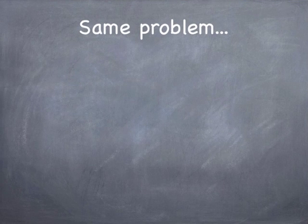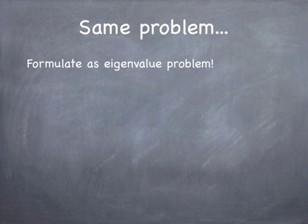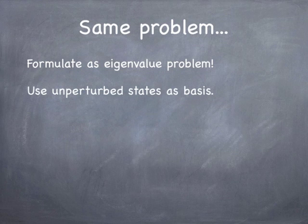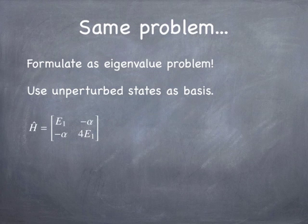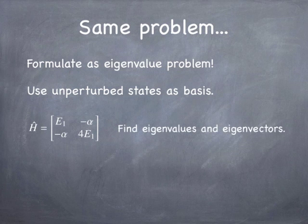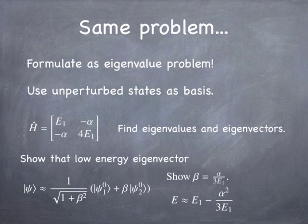There's another way we can attack this problem. We can treat it as an eigenvalue problem. I want you to show, using the unperturbed states as a basis, the ground state and the first excited state (n equals 1 and n equals 2), that you can write the Hamiltonian in matrix form, where alpha is minus the matrix element between n equals 2 and n equals 1 with the perturbation. Find the eigenvalues and eigenvectors. The eigenvector is the ground state plus beta times the first excited state, and beta is alpha divided by 3E₁. Same result.